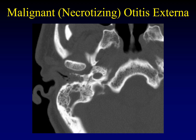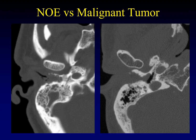Now this one is not a tumor — it is malignant or necrotizing otitis externa. Notice again all the little rat bite defects in the anterior and posterior walls of the external auditory canal. This is a classic appearance for necrotizing otitis externa. I'm going to throw up the last two pictures: necrotizing otitis externa and malignancy. I wouldn't be able to tell you which is which. They look nearly identical, and tissue sampling and the clinical scenario are going to be what differentiate these two lesions.